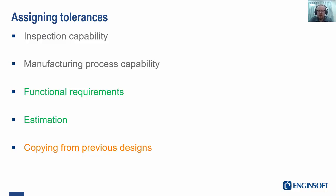Functional requirements — this is most important. We need to ensure that our assembly will function and will do what we want with a specified variation on our parts.